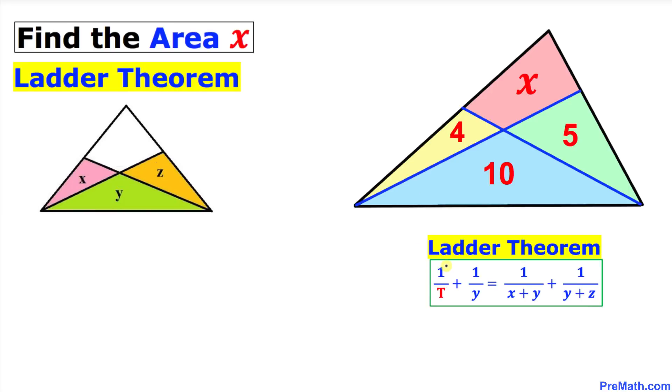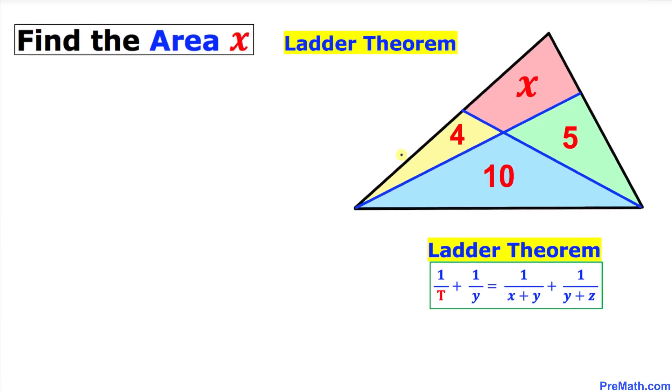Then we are going to get this relationship: one over T, where T stands for total area of this whole triangle, that means this plus this plus this and plus this one as well, plus one over y where y is just this base triangle, equals one over x plus y where x plus y means this big triangle, plus one over y plus z where y plus z is this area.